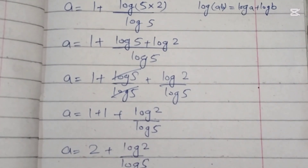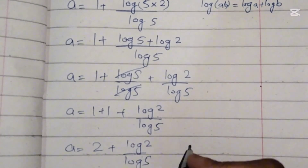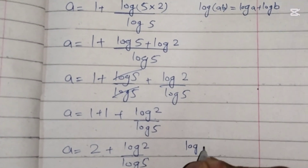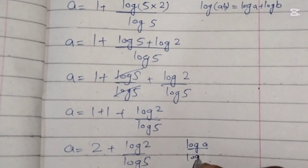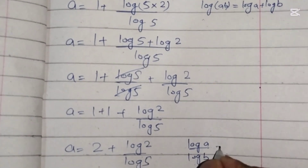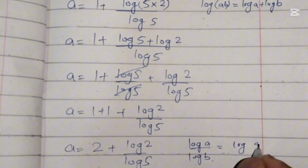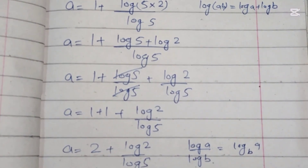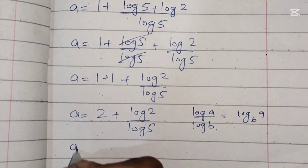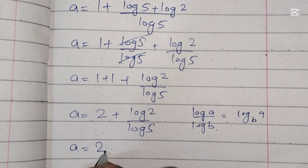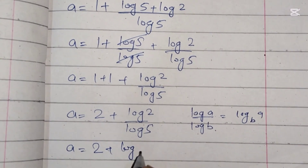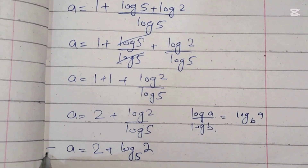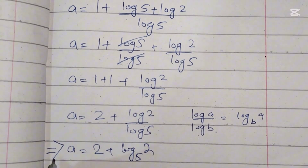For this term we will use another rule of log: log of A over log of B is always equal to log of A with base B. Therefore a equals 2 plus log of 2 with base 5. This is the final value of a.